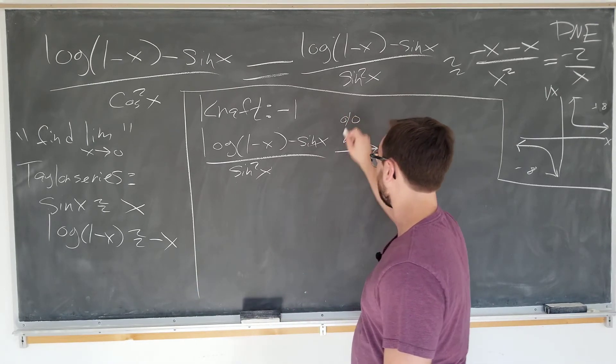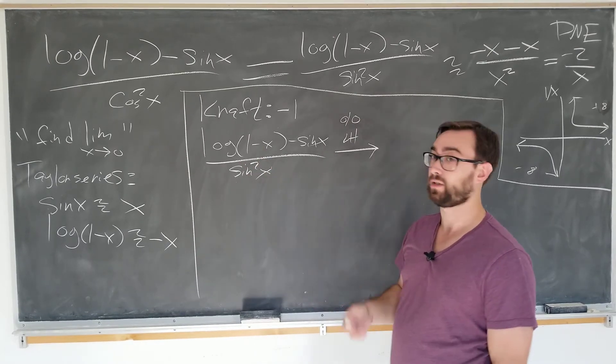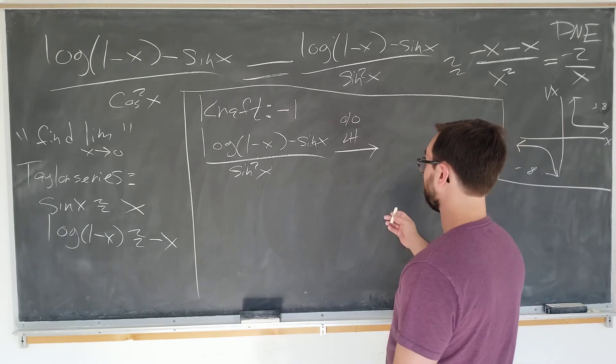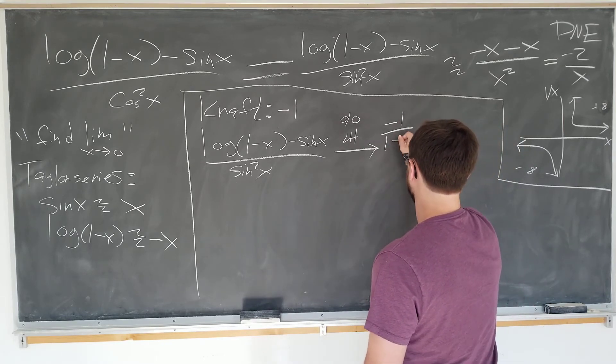We take the derivatives here. We get negative 1 over (1 minus X), minus cosine X, over 2 sine X cosine X.